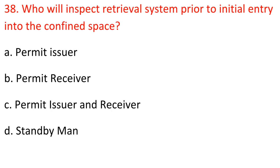Question 38: Who will inspect the retrieval system prior to initial entry into the confined space? A. Permit issuer. B. Permit receiver. C. Permit issuer and receiver. D. Standby man. Answer: C. Permit issuer and receiver.